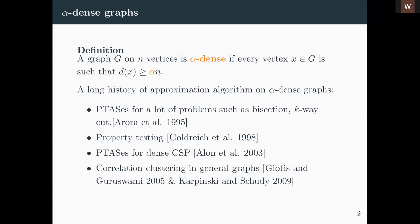A few years later, Alon et al. in 2003 showed that basically the same type of ideas can be used to design PTASes for dense CSPs — a generalization of the previous problems. We can also say that in general graphs, not only alpha-dense graphs, PTASes for correlation clustering when the number of clusters is fixed also results from ideas developed for alpha-dense graphs. Here we have papers by Giotis and Guruswami in 2005, and then Karpinski and Schudy gave an efficient PTAS in 2009.